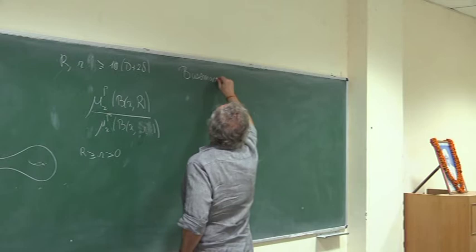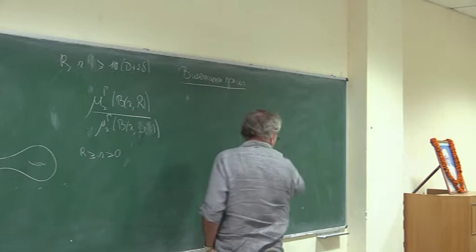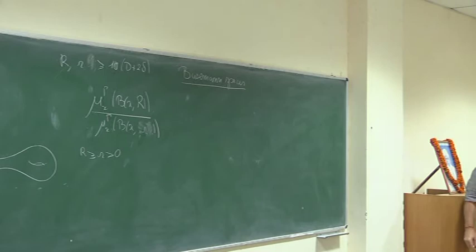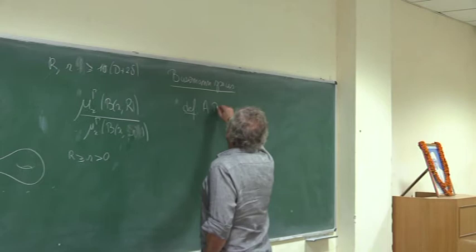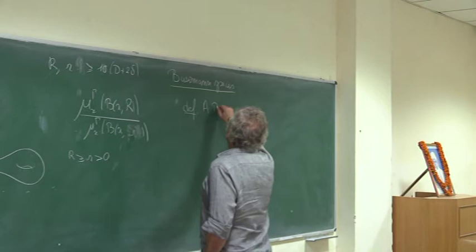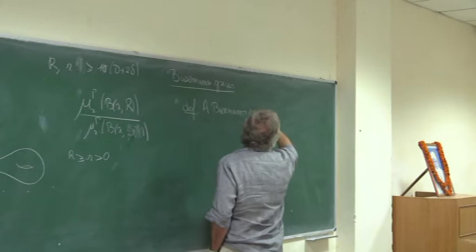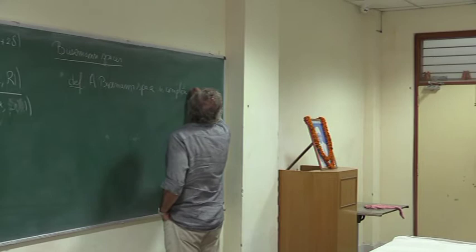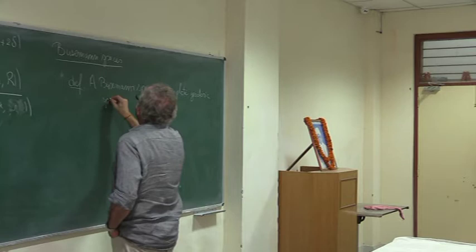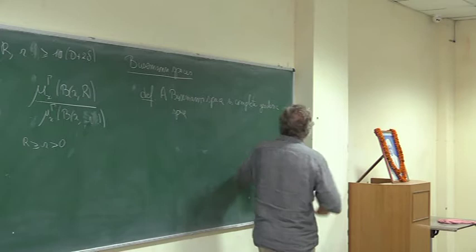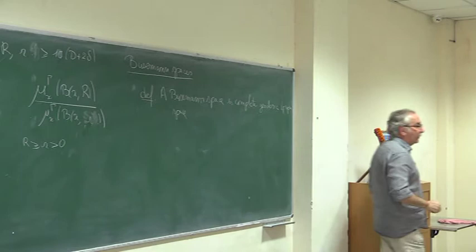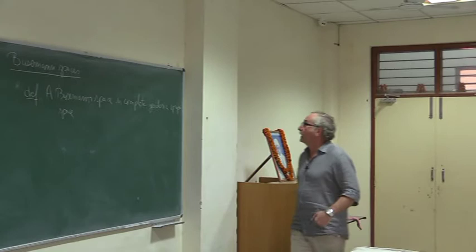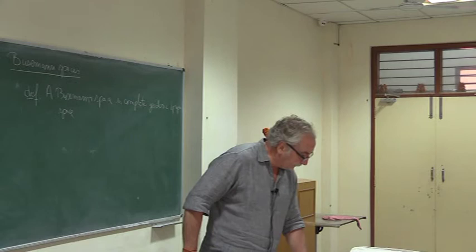I want to talk about Busemann spaces. The name Busemann has been mentioned many times since the beginning of this school and has contributed a lot to the geometry of metric spaces. A Busemann space is a metric space that is complete as a metric space, geodesic — meaning between two points there is a minimizing geodesic — and also proper, so locally compact in some sense. Its distance is convex.